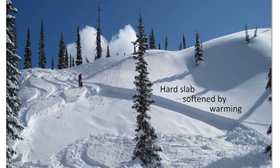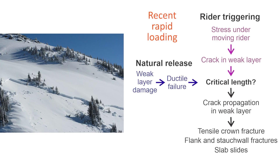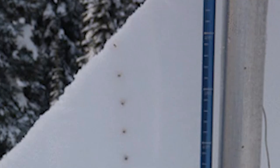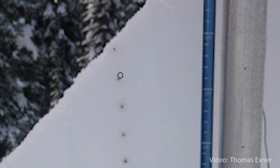Also, rapid warming can soften hard slabs to the point where crack initiation and propagation are possible. So rapid loading can shorten the critical crack length and consequently make natural and rider-triggered dry slab avalanches more likely. But for natural slab avalanches, how does the crack or initial failure in the weak layer form? Let's start with creep on an avalanche slope. This clip shows two hours of fluffy snow creeping in a few seconds.